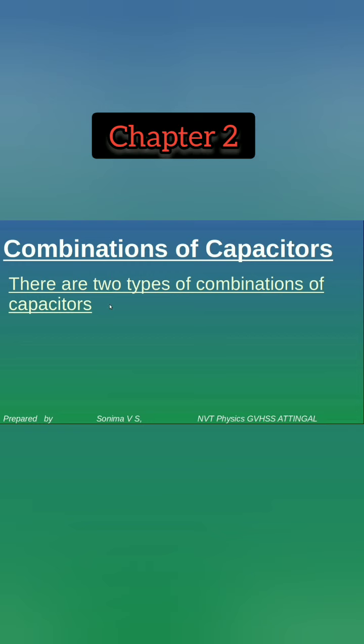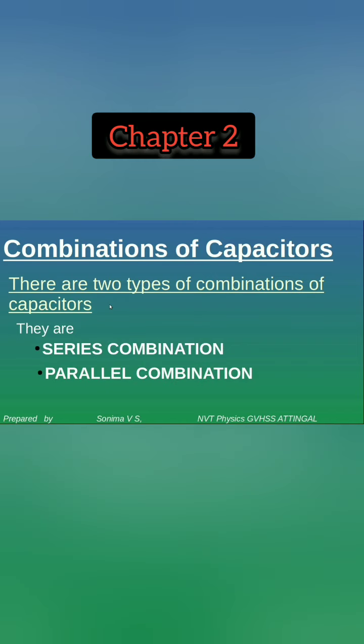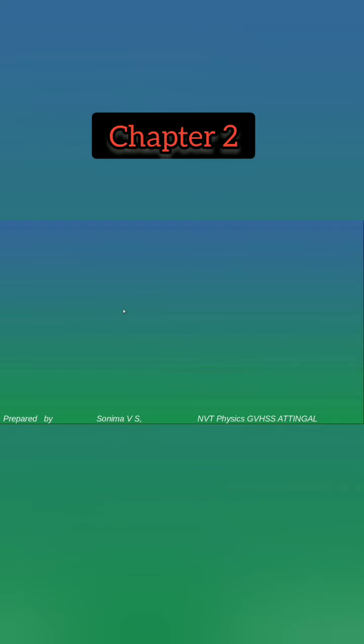There are two types of combinations of capacitors. The first is called series combination and the second one is called parallel combination. Let us start with the series combination.